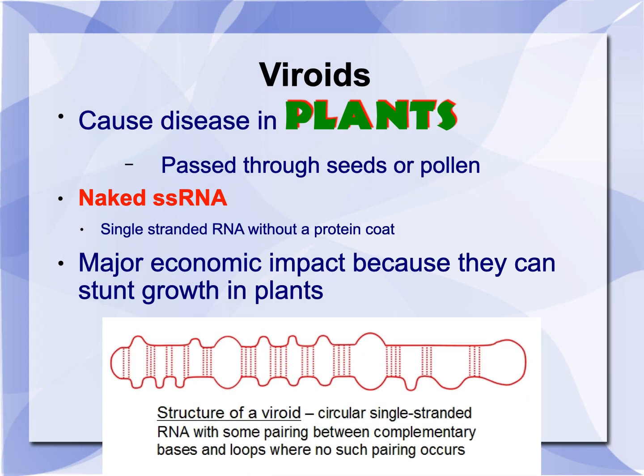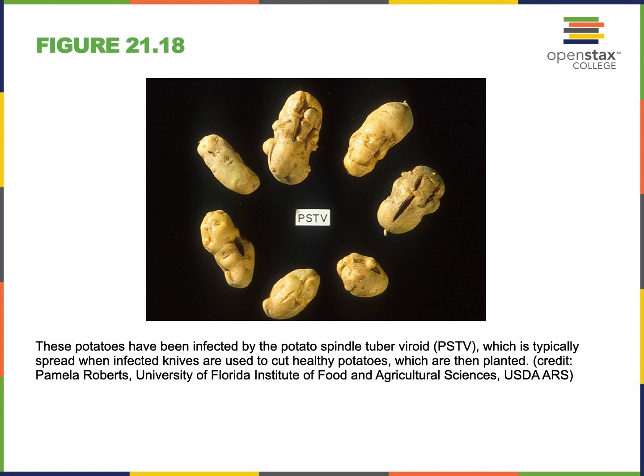That takes us to viroids. They cause disease in plants and can be passed through seeds or pollen. These are naked single-stranded RNA — no protein coat — and they cause major economic impact because they can stunt growth. Here's a picture of the potato spindle tuber viroid, or PSTV.